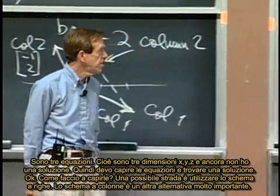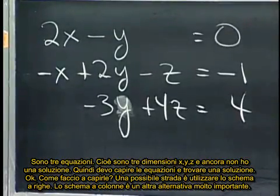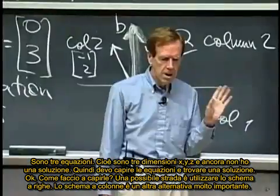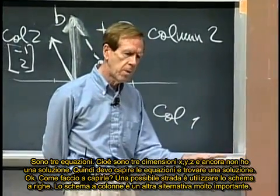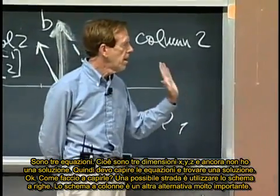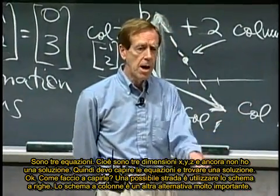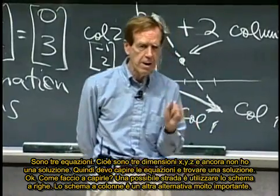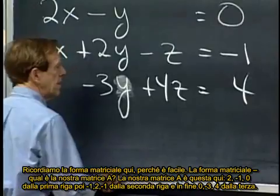That's three equations. I'm in three dimensions, x, y, z, and I don't have a solution yet. So I want to understand the equations and then solve them. How do you understand them? The row picture is one way, the column picture is another very important way. Let's remember the matrix form here, because that's easy.